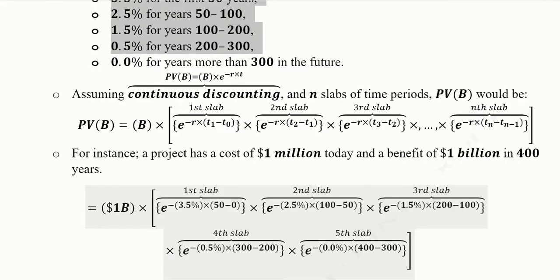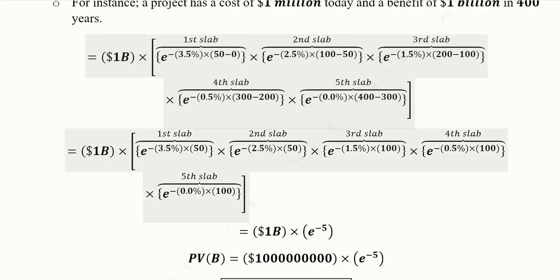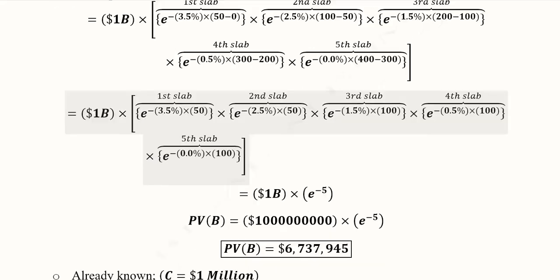And this is already mentioned here in each of these slabs - the discount rate and the slab that we are talking about. So the next step would be the simplification, which is very easy to understand. As you can see, this would become this, and this would become this. This is going to be 100, and so on.